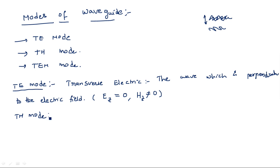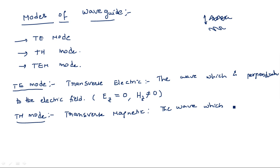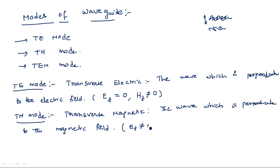Similarly, TM mode stands for transverse magnetic. In TM mode, the wave is perpendicular to the magnetic field, so the electric field exists and the magnetic field component is zero: Ez ≠ 0 and Hz = 0. So depending on the type of mode, one component is zero and the other exists. In TE, the magnetic component is non-zero and the electric component is zero; in TM, the electric component is non-zero and the magnetic component is zero.